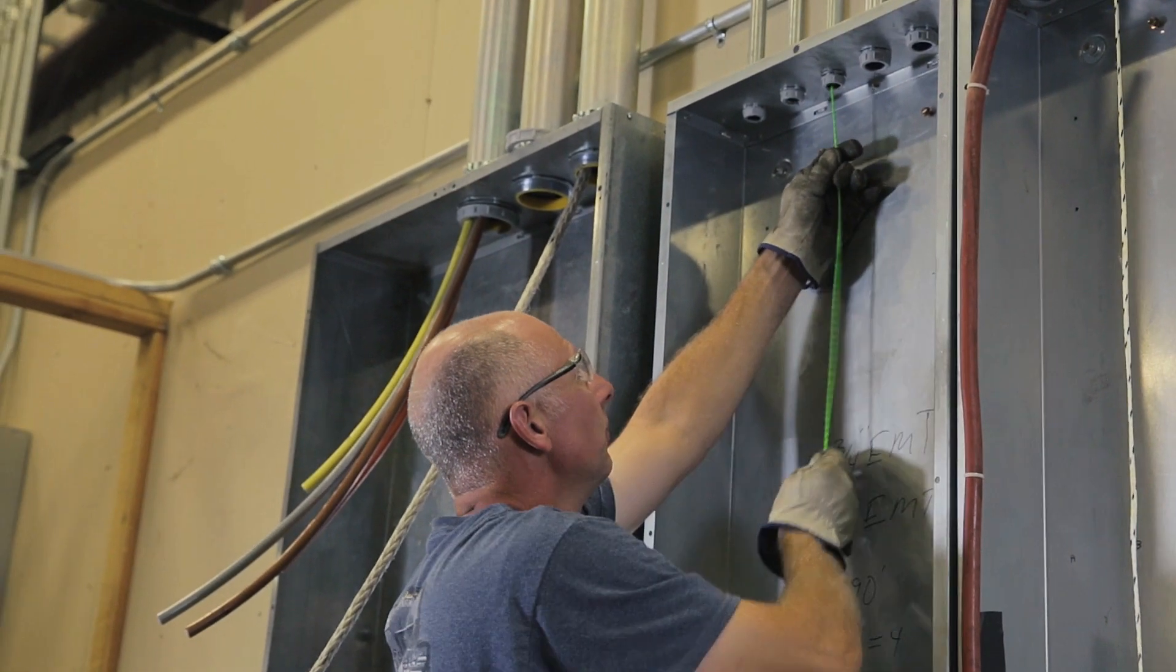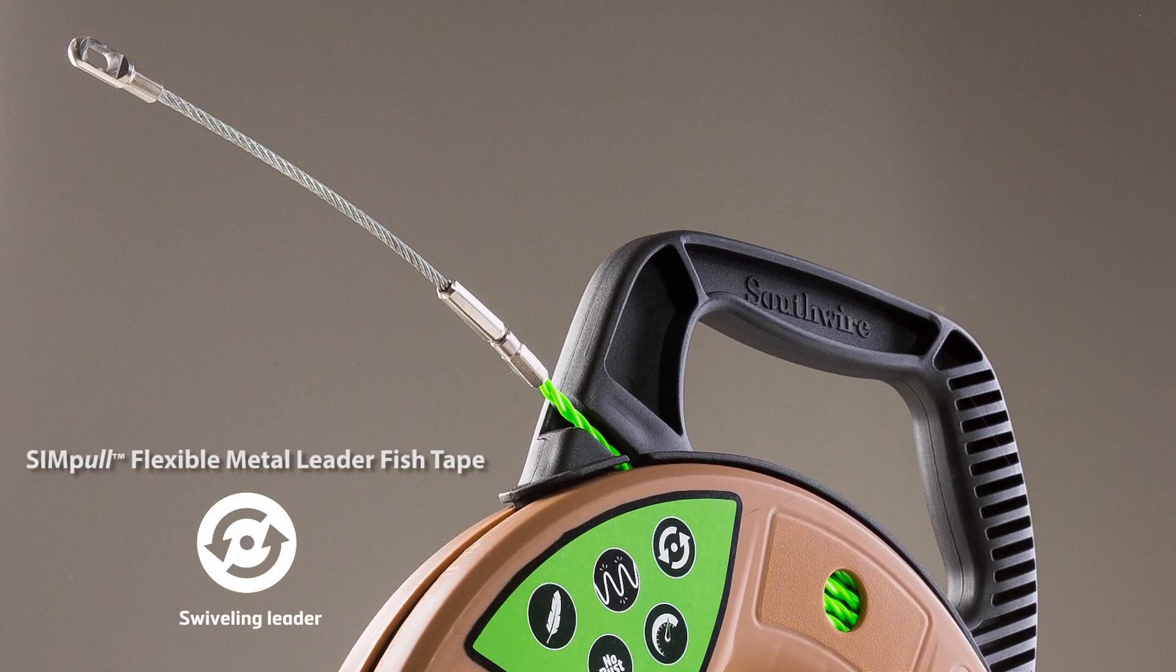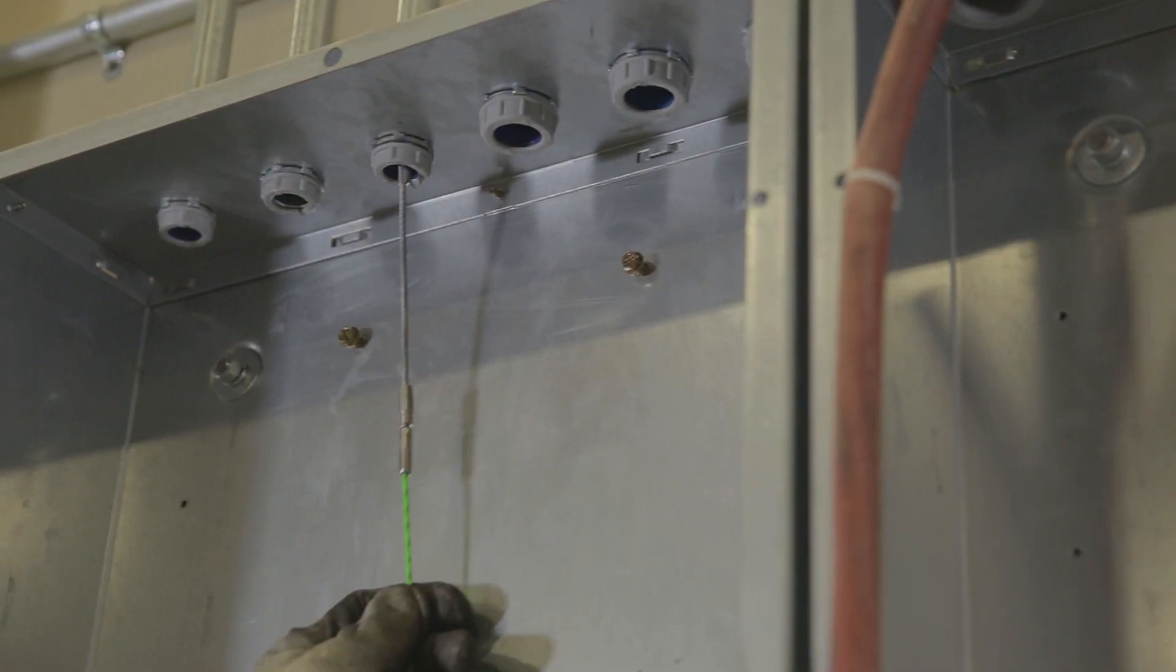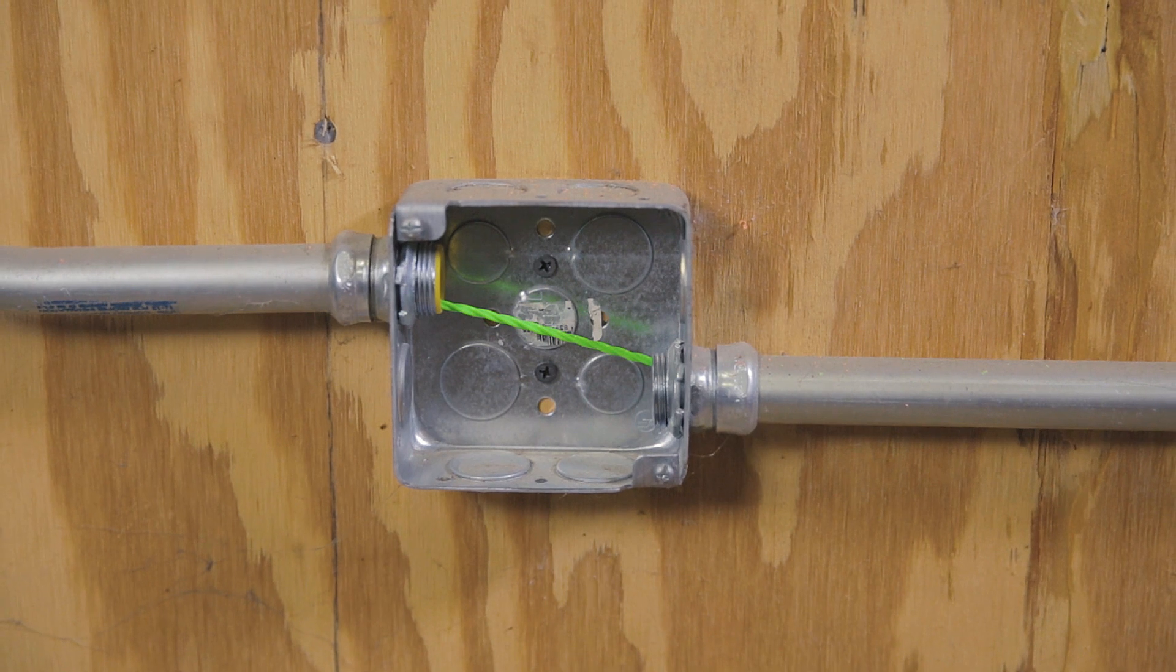The Simple Fish Tape features two different leaders on various models. The flexible metal leaders with a swiveling tip allow the fish tape to roll off turns and continue moving without binding in tight radius turns.